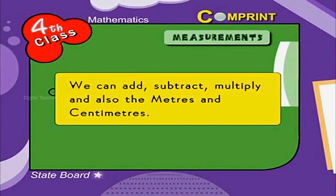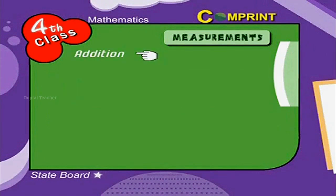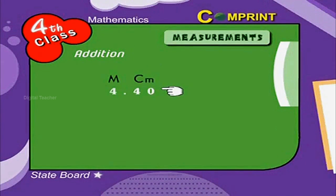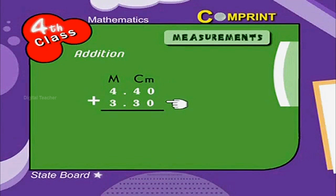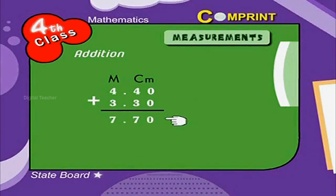We can add, subtract, multiply, and also divide the meters and centimeters. Let us see a few examples. Addition: 4 meters and 40 centimeters plus 3 meters 30 centimeters. Together we get 7 meters and 70 centimeters.